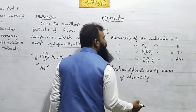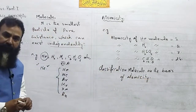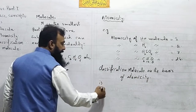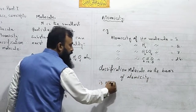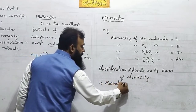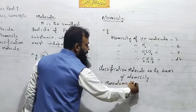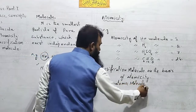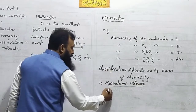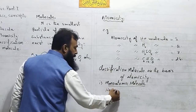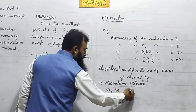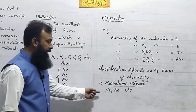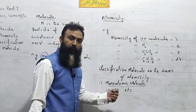When we classify molecules on the basis of atomicity, the first type is called monoatomic molecule — a molecule which consists of only one atom. Examples include the noble gases: helium, neon, etc.